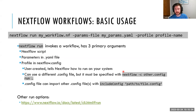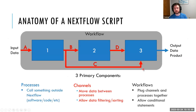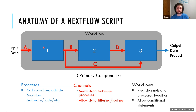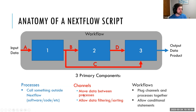What do Nextflow scripts look like? Nextflow scripts are made up of three big components: processes, channels, and workflows. Processes are the individual steps in your workflow — represented by blue boxes in the diagram — and these call something that exists outside of Nextflow, like some software or code. Processes are chained together with channels. Channels' job is to move data around — on the diagram, channels are the red arrows. Input data is taken by a channel into the first process, and the output of the first process is sent to process two and also to process three.